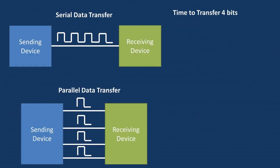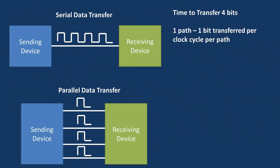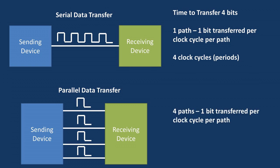Now let's compare time when sending four bits of information in series versus parallel. In series, there is one path which can transfer one bit per clock cycle, so the time to transfer four bits will be four clock cycles. In the parallel circuit, on the other hand, we have four paths which each can transfer one bit per clock cycle, so the time to transfer four bits is one clock cycle.